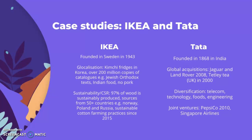Tata Motors was founded in 1868 in India. As a global strategy, it uses global acquisitions — including taking control of Jaguar and Land Rover in 2008, and Tetley Tea of the UK in 2000. They also diversify broadly across telecom, technology, foods, engineering services, and vehicles. Additionally, they have engaged in joint ventures, such as with PepsiCo in 2010 and Singapore Airlines.